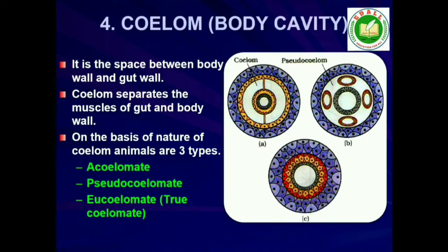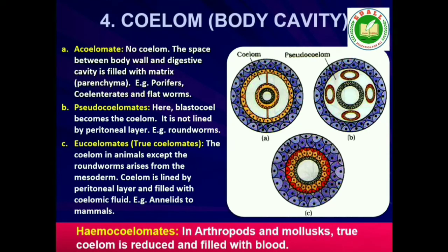4. Coelom: Presence or absence of a cavity between the body wall and the gut wall is very important in classification. The body cavity lined by mesoderm is called coelom. Animals possessing coelom are called coelomates, e.g., annelids, molluscs, arthropods, echinoderms, hemichordates and chordates. In some animals, the body cavity is not lined by mesoderm; instead, mesoderm is present as scattered pouches between ectoderm and endoderm — such a cavity is called pseudocoelom, and those animals are called pseudocoelomates, e.g., aschelminthes. Animals in which the body cavity is absent are called acoelomates, e.g., Platyhelminthes.